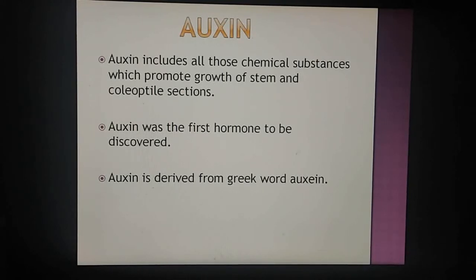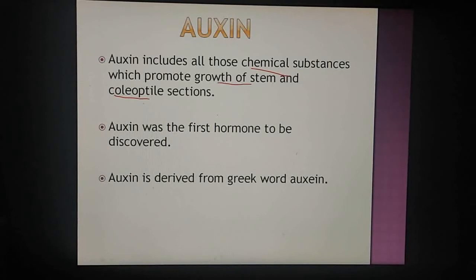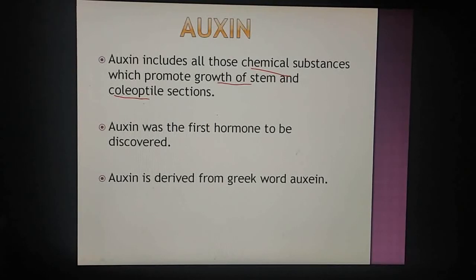Auxin includes all those chemical substances which promote growth of stem and coleoptile sections. Coleoptile is the protective sheath covering young leaves when they emerge. Chemical substances required for stem growth are known as auxin. Auxin is the first hormone that was discovered, and it is a Greek word meaning 'to grow or to increase'.